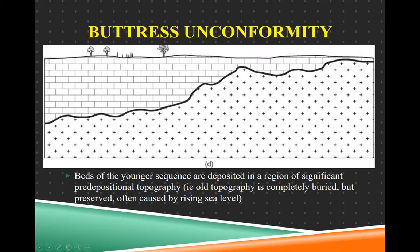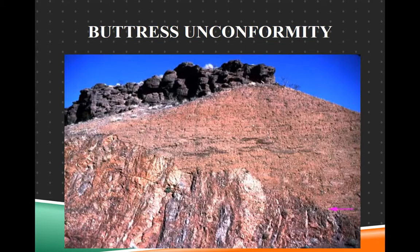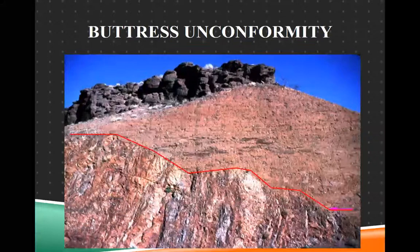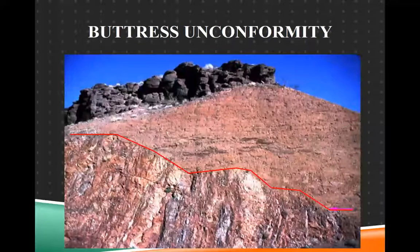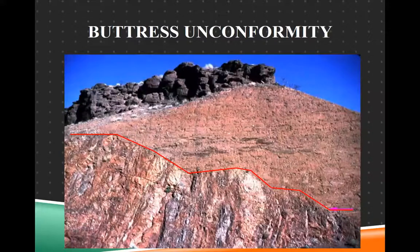Eventually it can be exposed — because of a road cut or mountain uplift and road cuts going through the mountains, we can sometimes see this. Here's an example of a buttress unconformity.